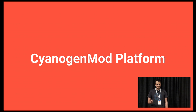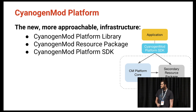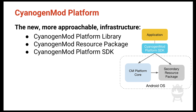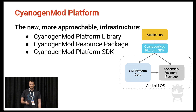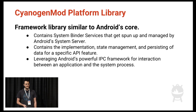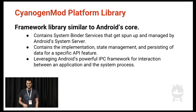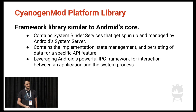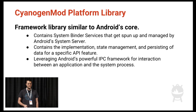So we sat down and figured out how to get around this, and we came up with the CyanogenMod Platform — a new, more approachable infrastructure. The way it works is we essentially duplicate the Android framework. There are three components: the platform library, a secondary resource package, and a statically linkable SDK. The platform library hosts all the system services spun up by the system server within Android — anything that does state management, like the profile service — and we're leveraging Android's powerful IPC framework for that.